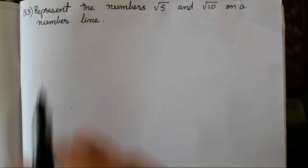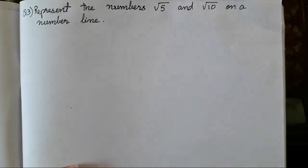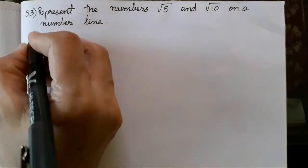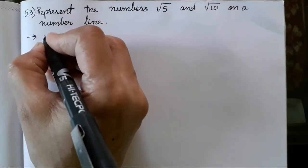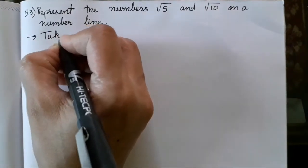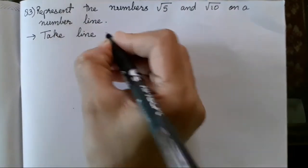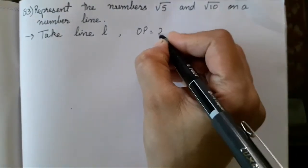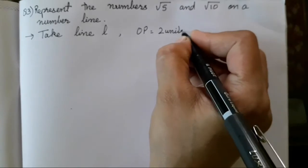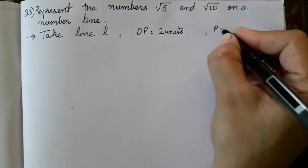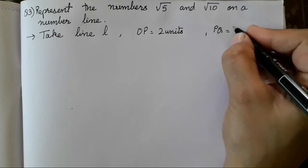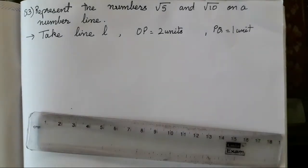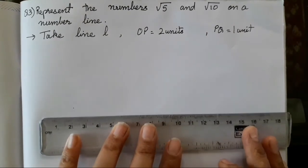The next question is: represent the numbers √5 and √10 on a number line. For this, we have to draw a number line. First, we write the measurements. Take line L. OP on that line will be 2 units, and PQ, which is perpendicular to line L, will be 1 unit. These are the measurements you have to take.